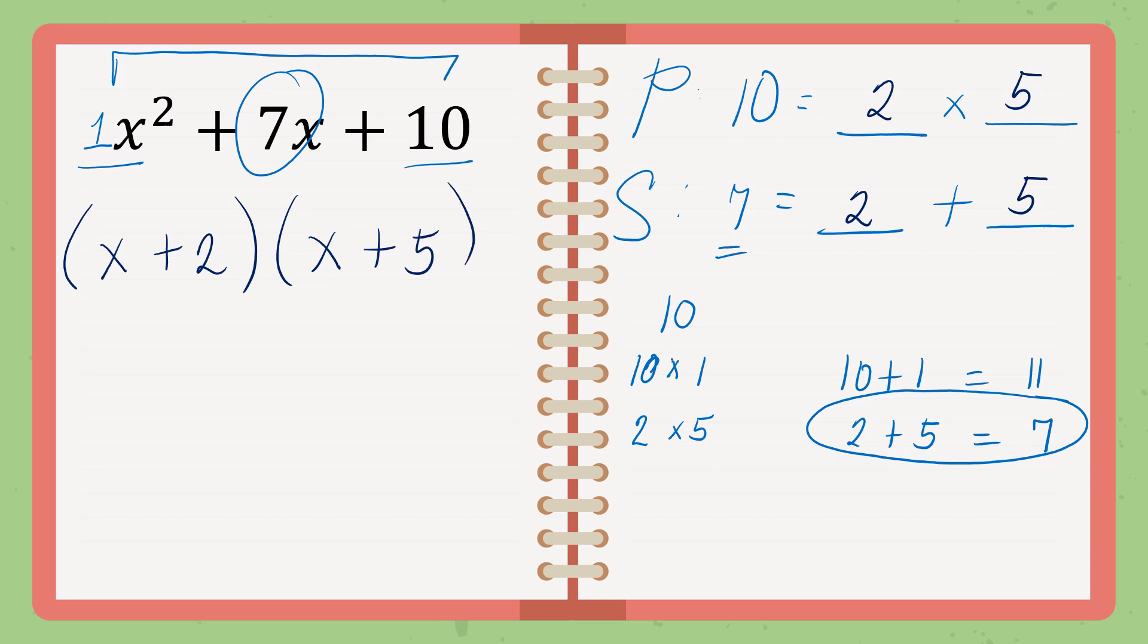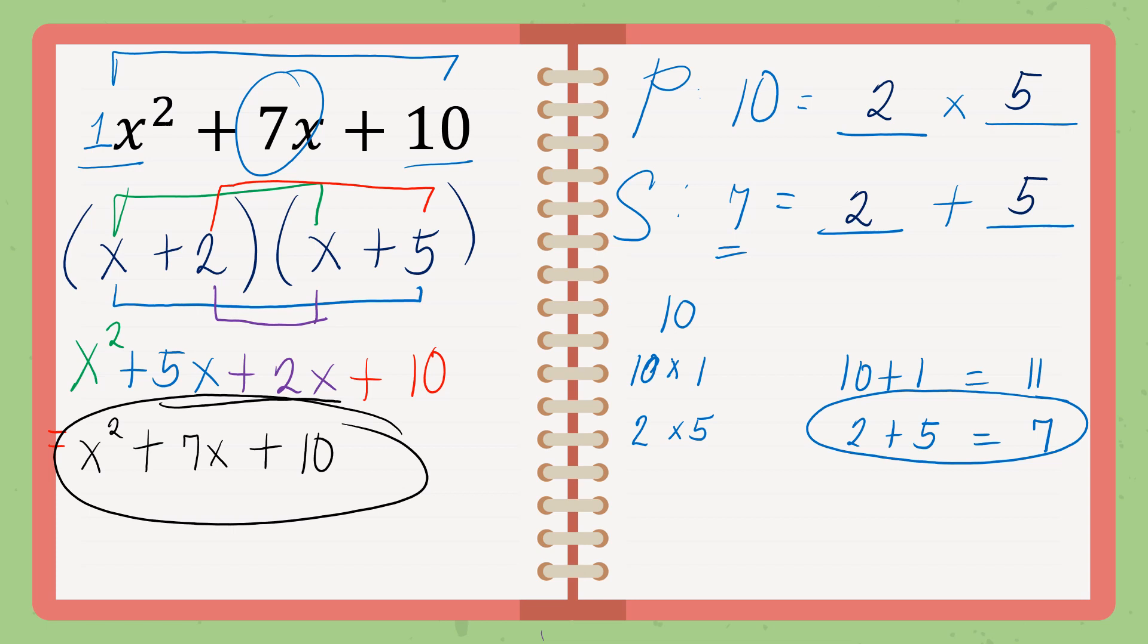So in checking this, we will use the FOIL method. Okay? So first term, x multiplied by x, that is x squared. Next, outer. X multiplied by 5. So that is 5x. Next, inner. 2 multiplied by x, and that is 2x. Then last term, 2 multiplied by 5. And that is 10. Then, add them. The answer is x squared plus 7x plus 10. As you can see, when we multiply the answer, we get the question. Therefore, we conclude that our answer is correct.